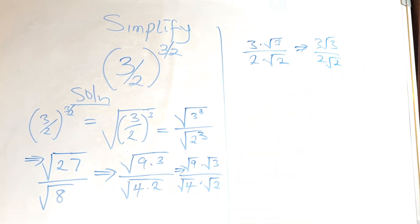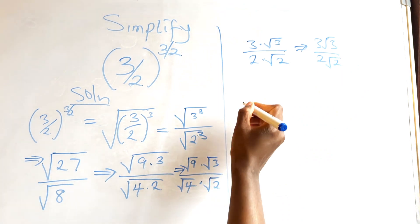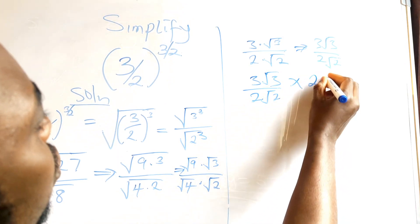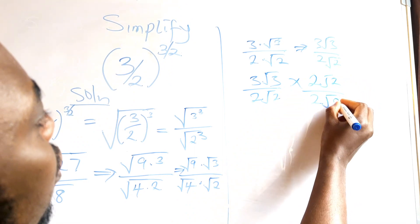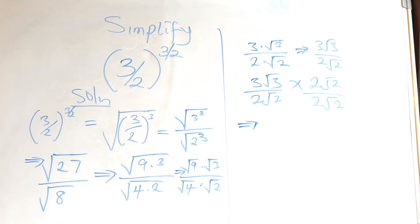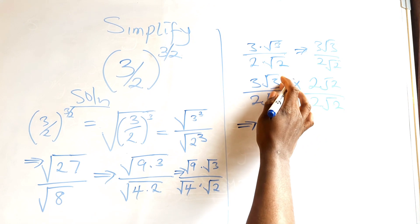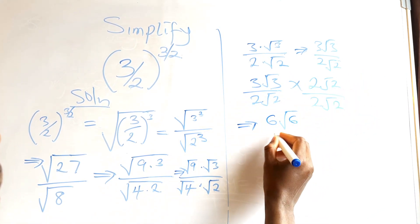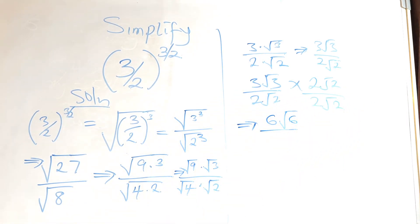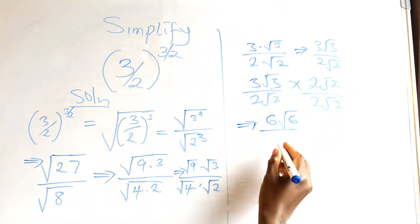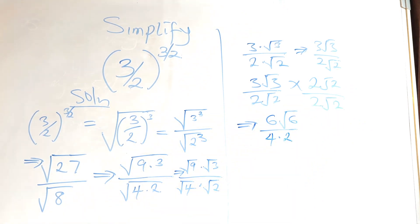This is not our final answer. To simplify further, we're going to multiply both the numerator and denominator by the denominator. So we have 3 root 3 all over 2 root 2, times 2 root 2 over 2 root 2. Let us multiply out: 3 root 3 times 2 root 2 — 3 times 2 is 6, root 3 times root 2 is root 6. All over: 2 root 2 times 2 root 2 — root 2 times root 2 is 2, and 2 times 2 is 4, giving 4 times 2 equals 8.